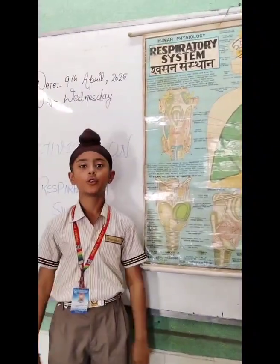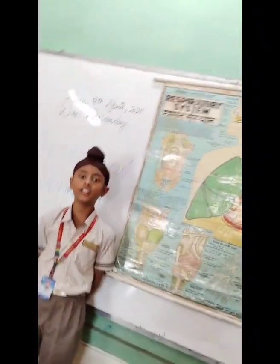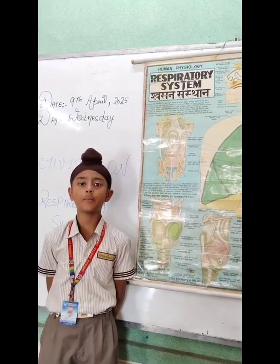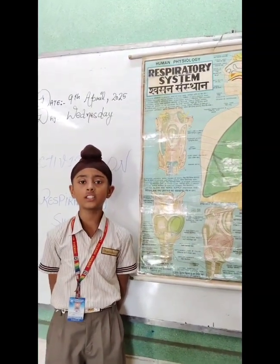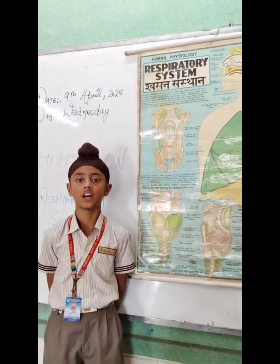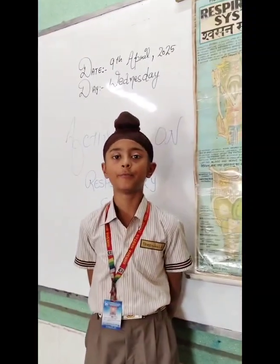My name is Gunnar Singh from class 40. Today I am going to tell about the respiratory system. The order includes nose, windpipe, and lungs. Air travels from the nose to the lungs through the windpipe.